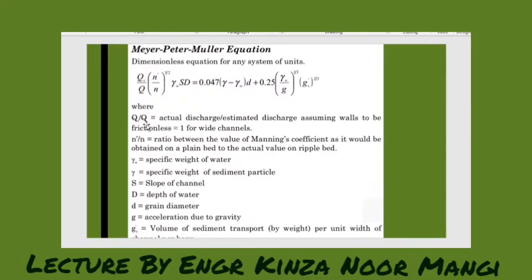Qs to Q ratio is basically the actual discharge to the estimated discharge assuming walls to be frictionless, and mostly for wide channels this ratio is taken as one. Now n' to n is the ratio between the value of the Manning's coefficient as it would be obtained on a plain bed to the actual value on the rippled bed.